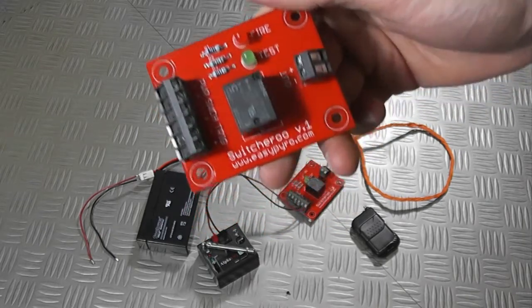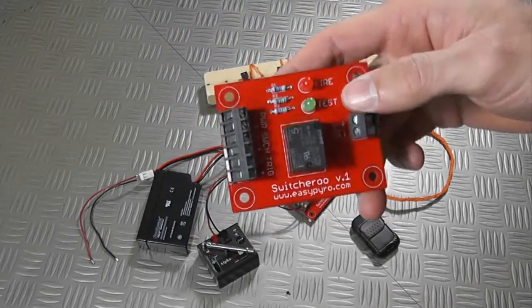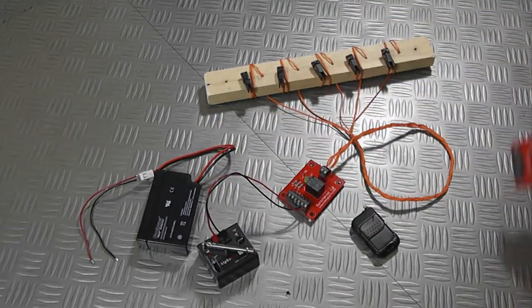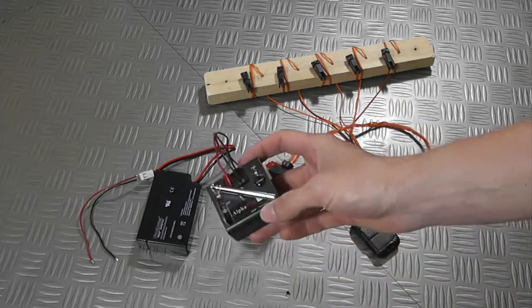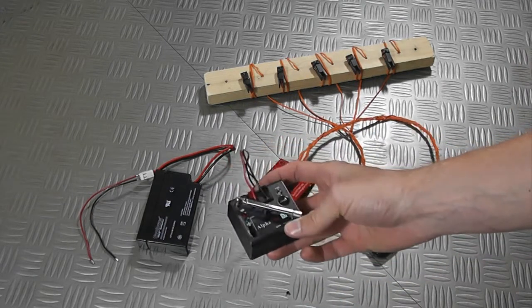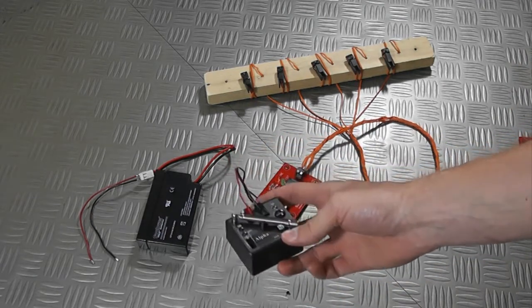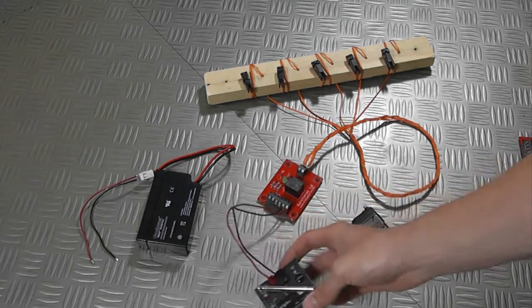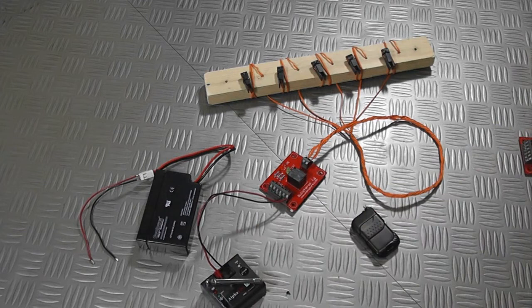Now what the switcheroo is for is for switching higher current loads from your firing system. So a good example here would be if you have our single cue firing system here, this is just a one shot receiver with a six volt output. It can't really fire more than one or two e-matches at once and it certainly wouldn't be able to fire more than a couple of talon igniters at once.